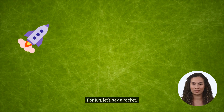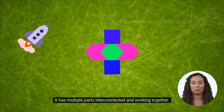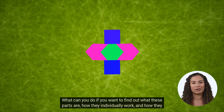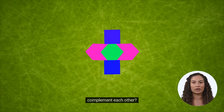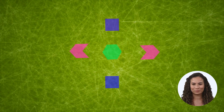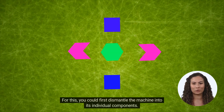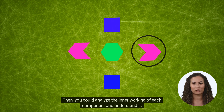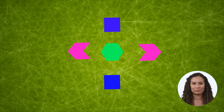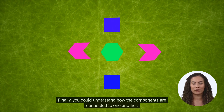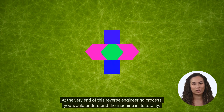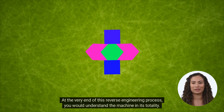Think of a complex machine — for fun, let's say a rocket. It has multiple parts interconnected and working together. What can you do if you want to find out what these parts are, how they individually work, and how they complement each other? For this, you could first dismantle the machine into its individual components. Then, you could analyze the inner working of each component and understand it. Finally, you could understand how the components are connected to one another. At the very end of this reverse engineering process, you would understand the machine in its totality.